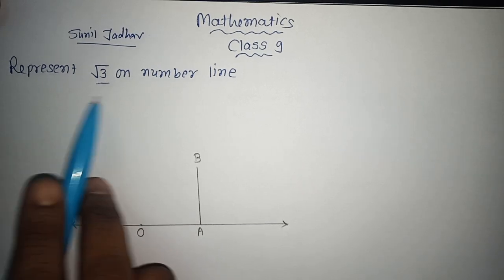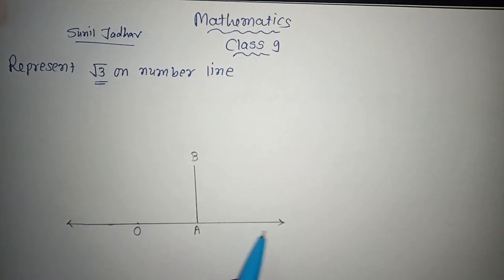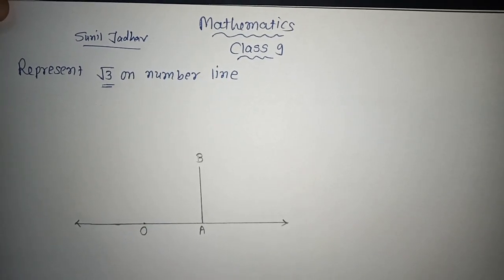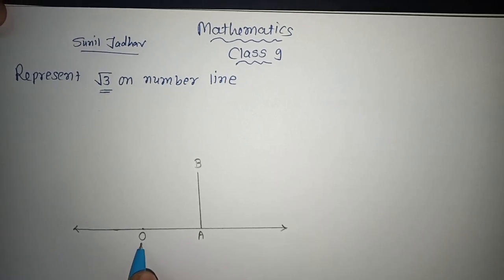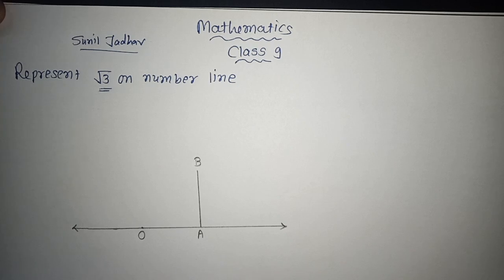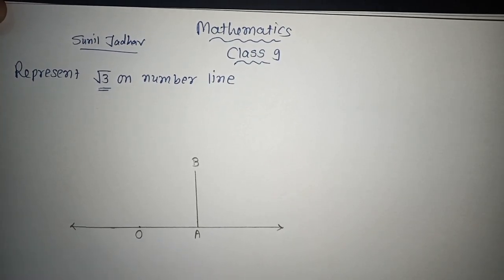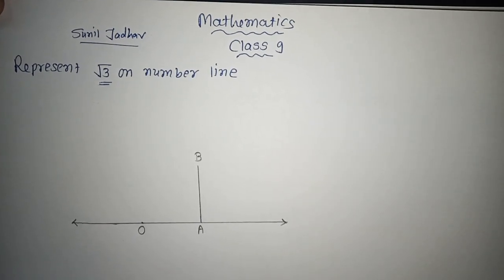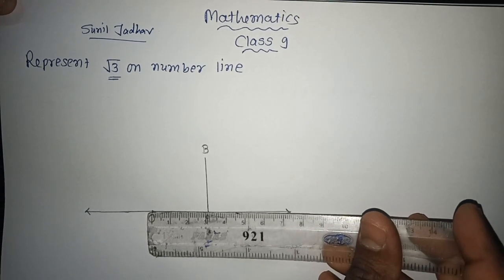To represent any irrational number on the number line, first of all I have drawn the number line. I have taken point O as the origin — origin means that point is equal to coordinate 0. Now first of all we have to take 1 unit. What is the meaning of 1 unit? 1 unit is equal to any centimeter you choose to take. Here you can see I have taken 3 centimeters equal to 1 unit.